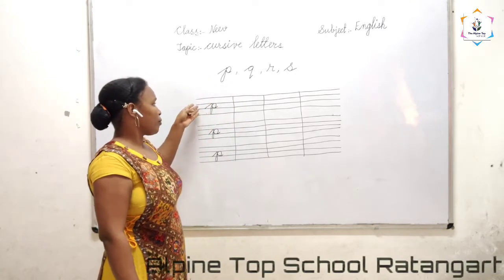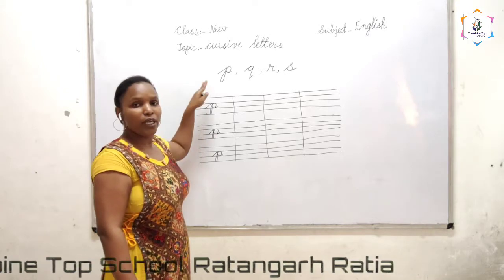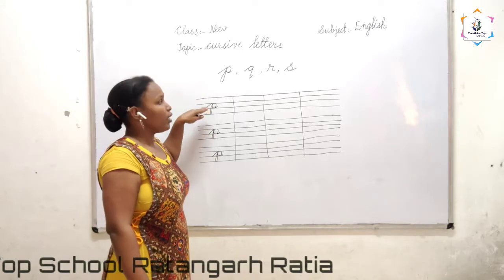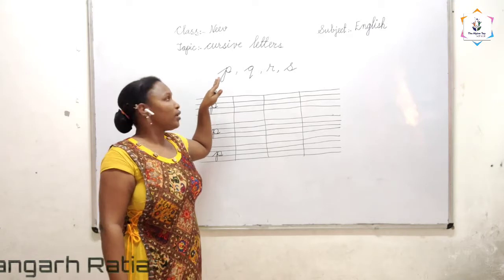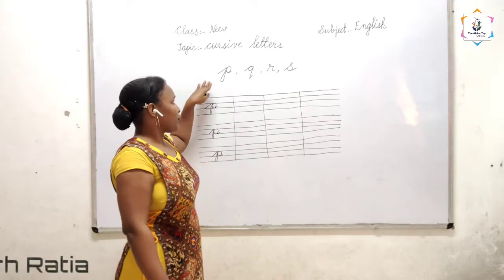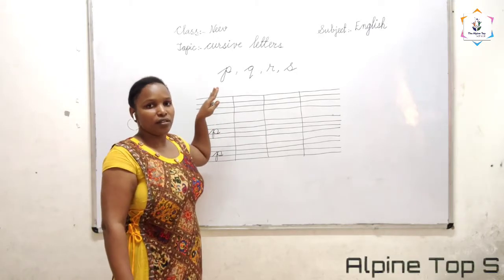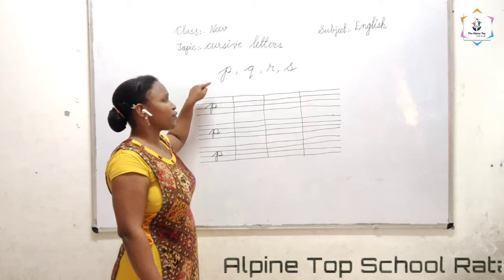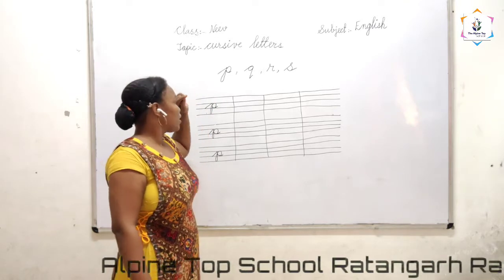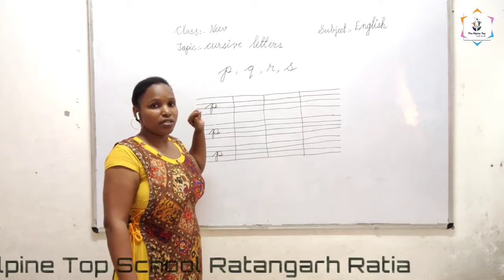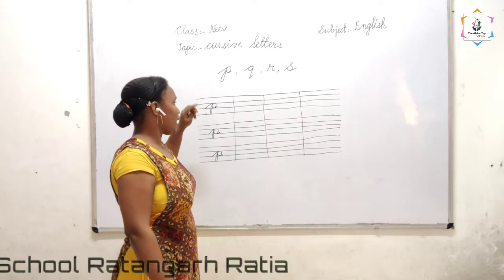Let us learn the sound of P. The sound of P is 'p'. Many words start with the letter P — like parrot, peacock. Like this.